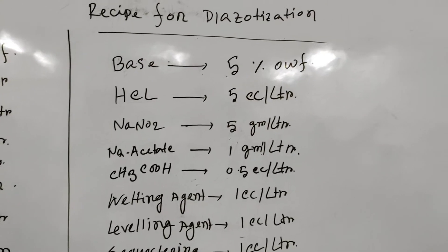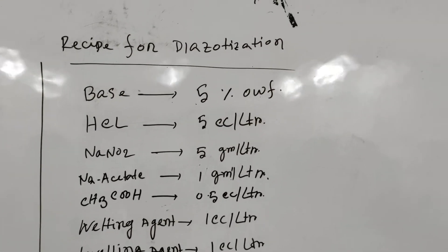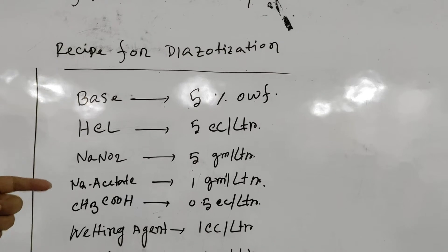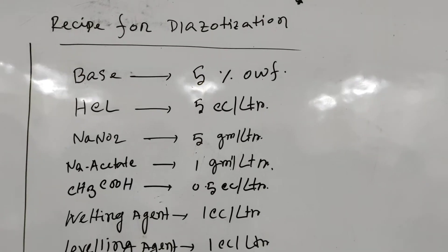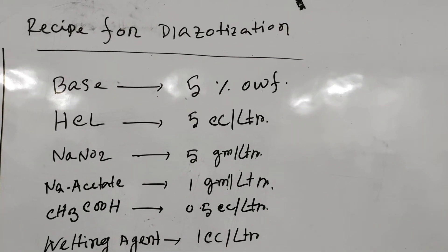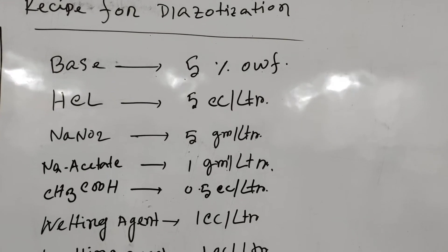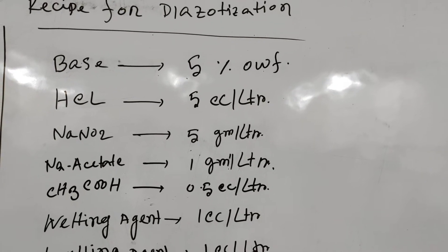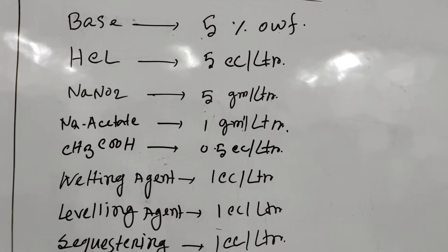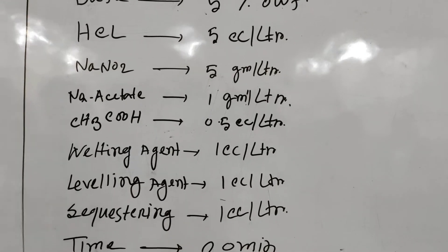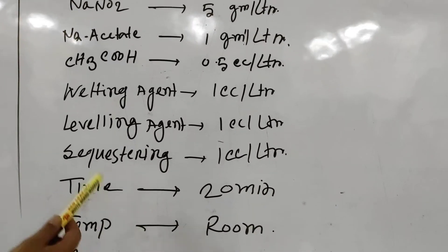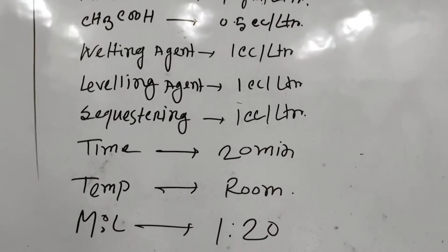The recipe for diazotization consists of base, hydrochloric acid, sodium nitrate, sodium acetate, acetic acid, wetting agent, levelling agent, and sequestering agent. The time is 20 minutes, and the temperature is room temperature.